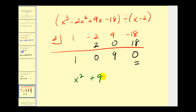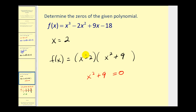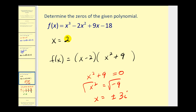So this cubic equals x minus two times the quadratic x squared plus nine. To find the remaining two zeros, set x squared plus nine equal to zero and solve: subtract nine from both sides, take the square root, and we get x equals plus or minus three i. Those are the two complex zeros. Together with the real zero x equals two, we have all three complex zeros we expect from a degree three polynomial.